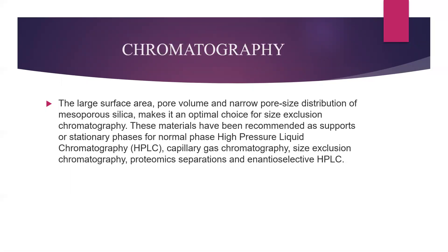The large surface area, pore volume, and narrow pore size distribution of mesoporous silica make it an optimal choice for size exclusion chromatography. These materials have been recommended as supports or stationary phases for normal phase high pressure liquid chromatography (HPLC), capillary gas chromatography, size exclusion chromatography, proteomic separations, and enantioselective HPLC.